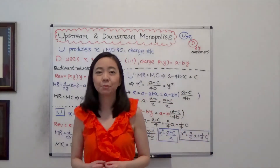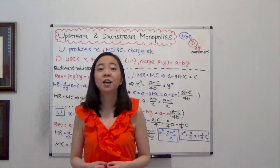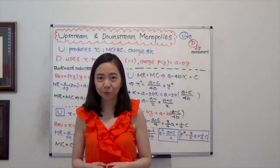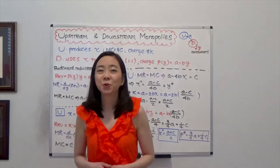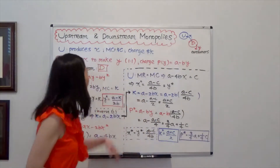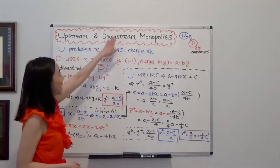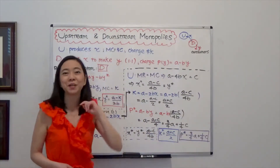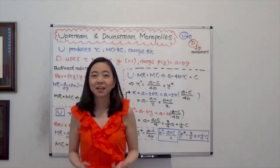Hello everyone, my name is Iris Franz. I'm Jolin Wairo. Today we're going to talk about upstream and downstream monopolies.